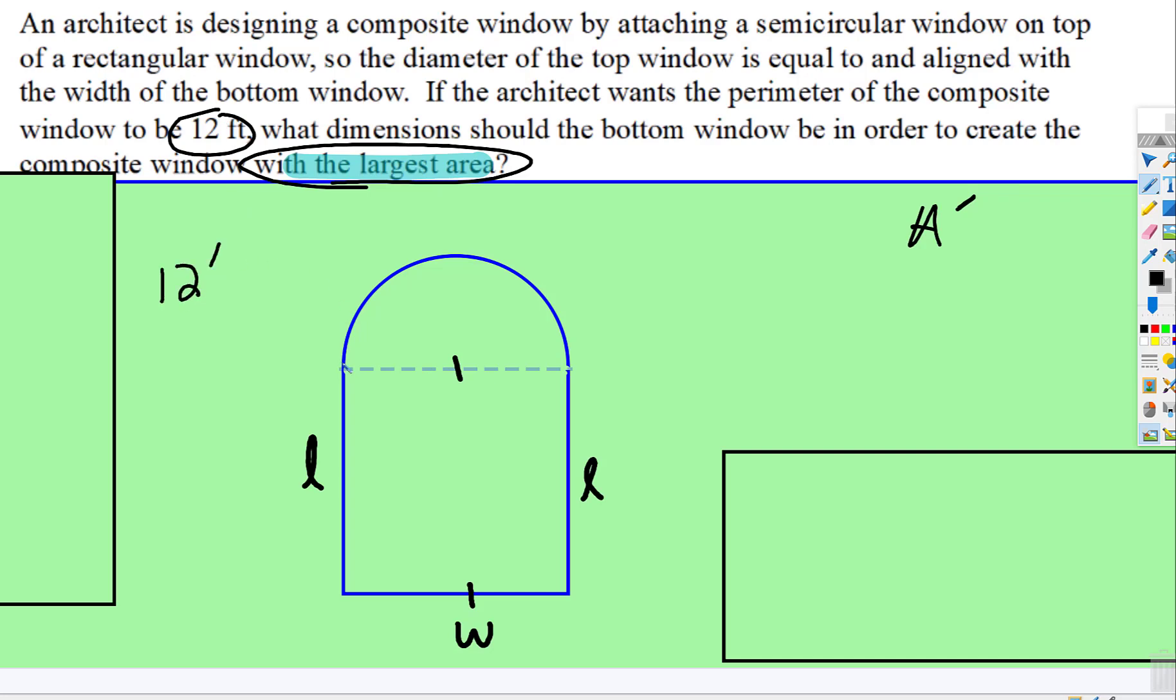The 12 feet includes half of the circumference of half of the circle and then the outside measurement of a rectangle with one of the sides missing.